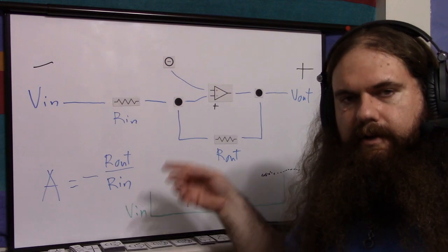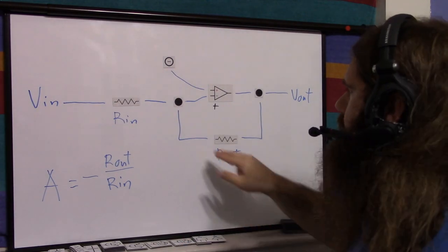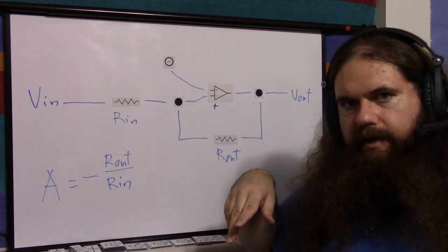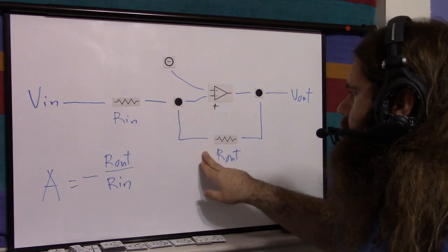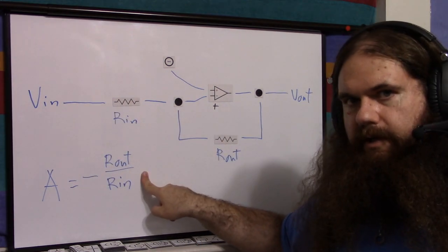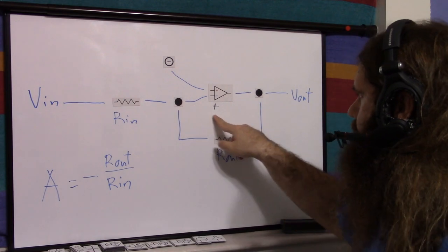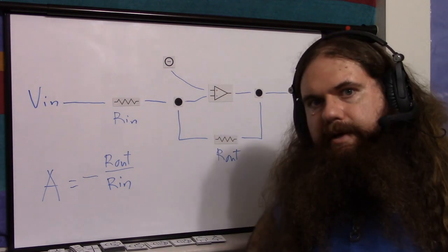Two resistors. You connect your circuit ground to the non-inverting input. You make a voltage divider. Using this ratio, you decide your gain. Using this ratio, hook it up like this, and it amplifies.